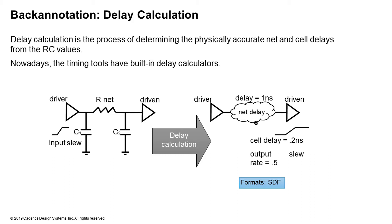One key step of back annotation is delay calculation. A delay calculator converts your RC network into a delay network. Statistical analysis requires net delays provided either through SDF, or SPEF converted internally through delay calculators, which are then used to plug in net delays during optimization. Delay calculation is an important piece of the back annotation process, and accuracy depends on both the extraction tools and the delay calculation mechanism used.